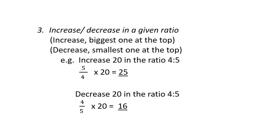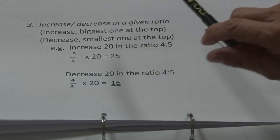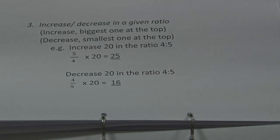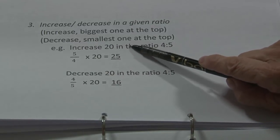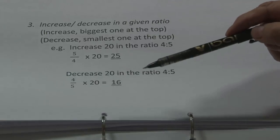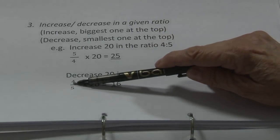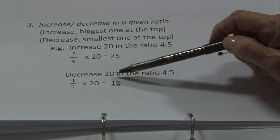The third type: increase or decrease in a given ratio. Even in grade 10 and grade 12 question papers, I haven't seen that they ask you to increase or decrease — I think it's because it's so easy. To increase means it becomes more. If the ratio is 4 to 5, you say 5 over 4 times 20, and it gives you 25. To decrease, you put the smallest number at the top: 4 over 5 of 20 is 16.